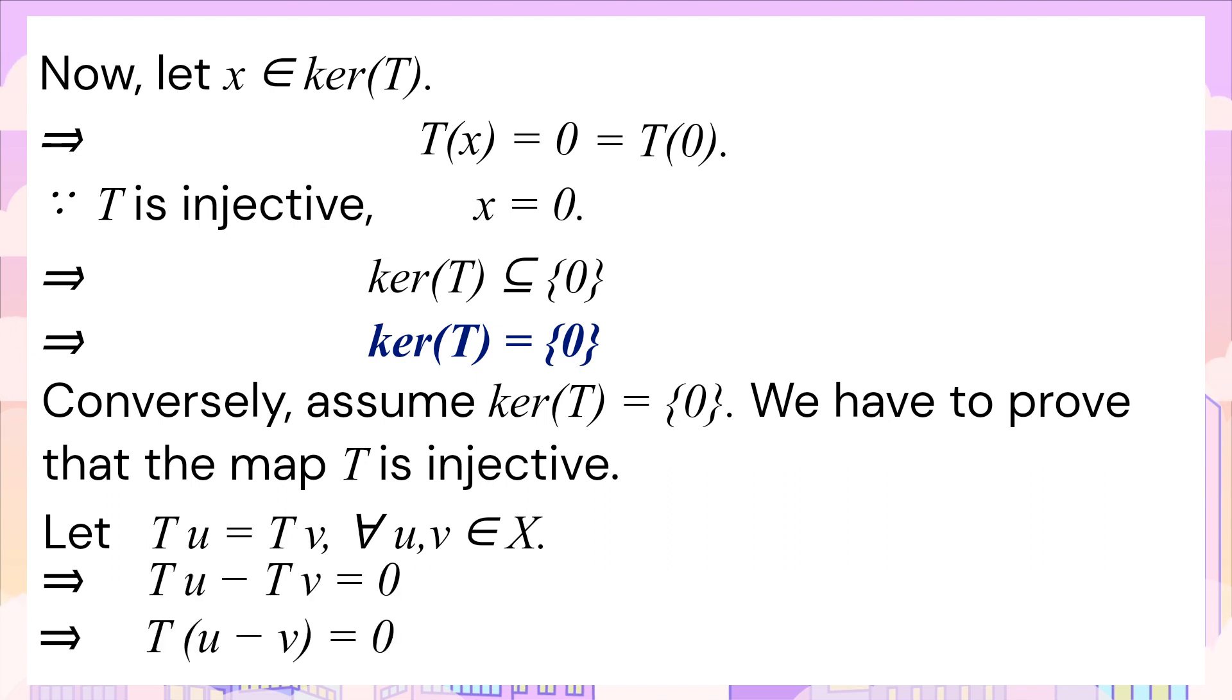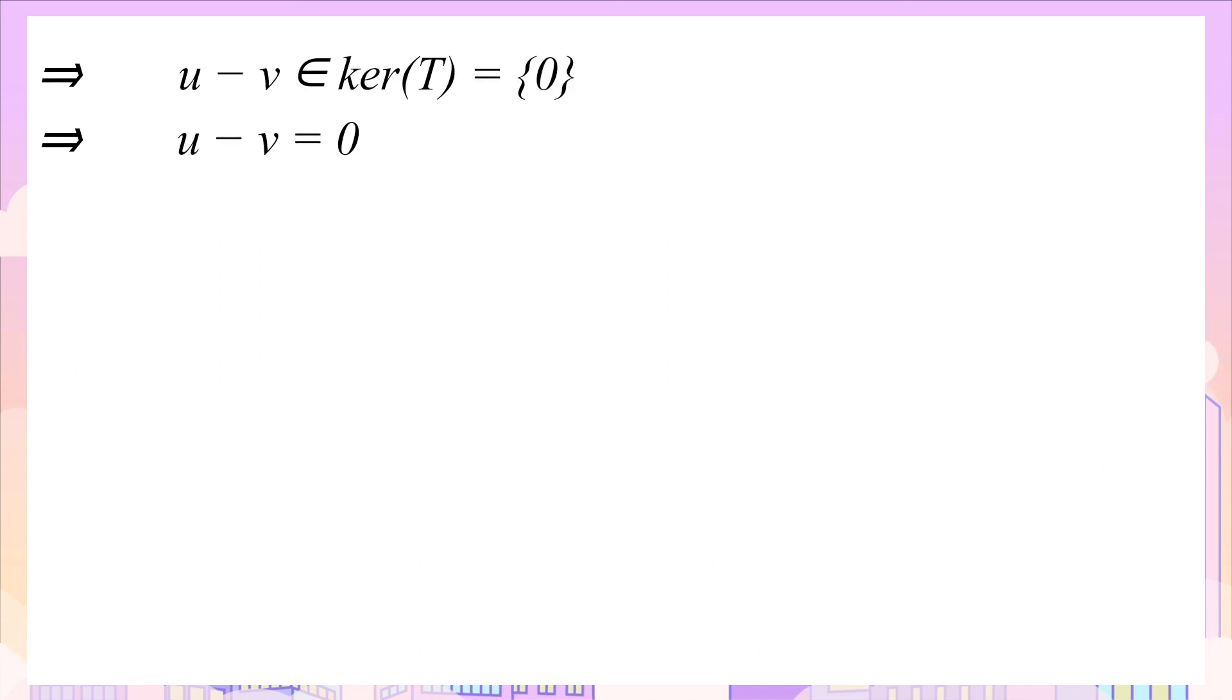By using the properties of linear transformation, this becomes T(u - v) equal to zero. And since u minus v equals zero, u minus v lies in the kernel of T. However, it has been presumed that the kernel of T is singleton zero.